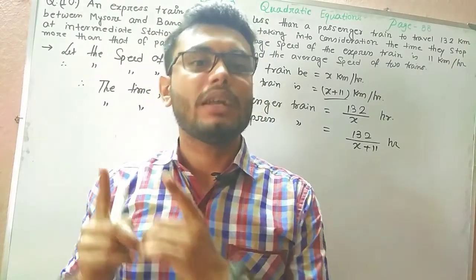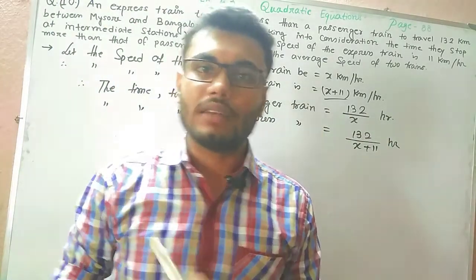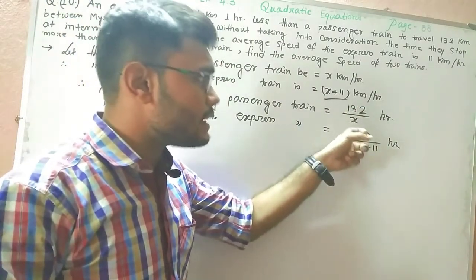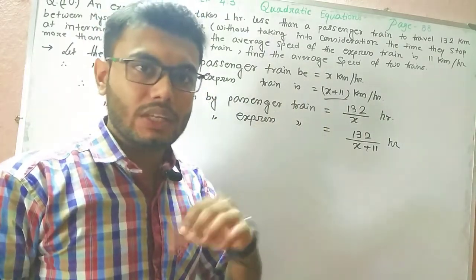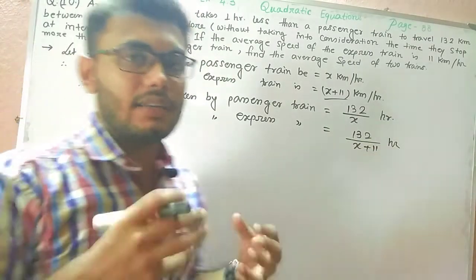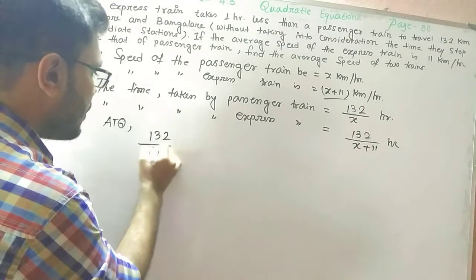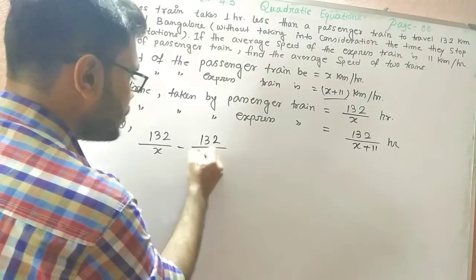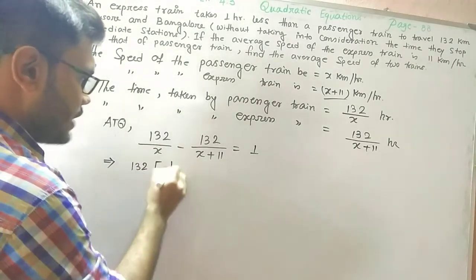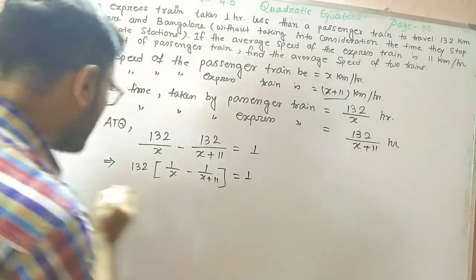If we subtract the time taken by the express train from the time taken by the passenger train, the answer should be 1. The quantity 132/x is greater because dividing by a smaller number gives a larger result. So, according to the question: 132/x minus 132/(x+11) equals 1. We can take 132 common: 132 times (1/x minus 1/(x+11)) equals 1.